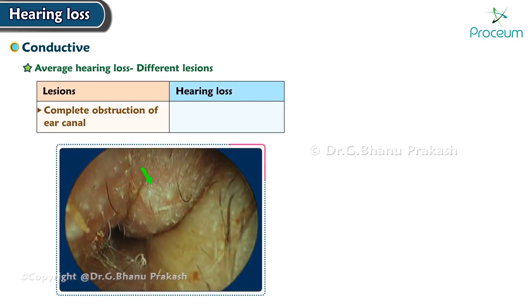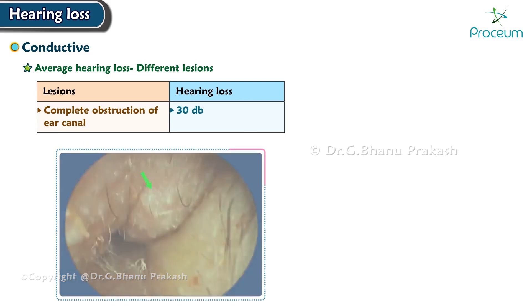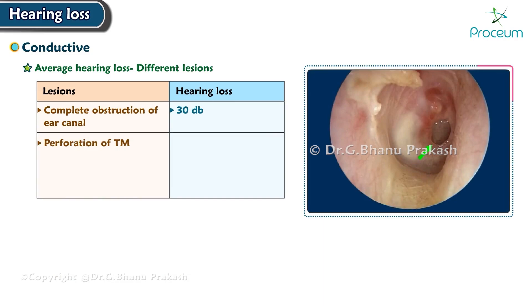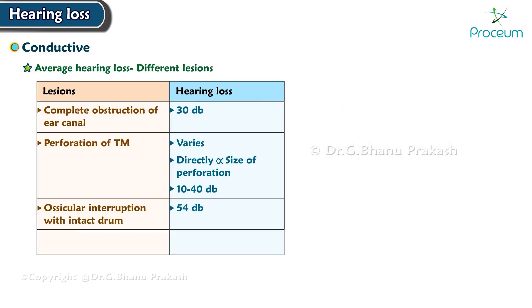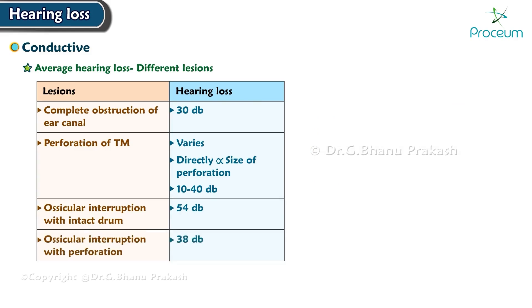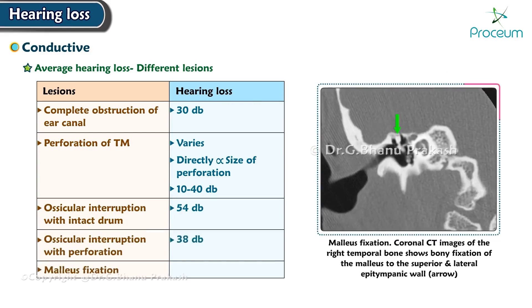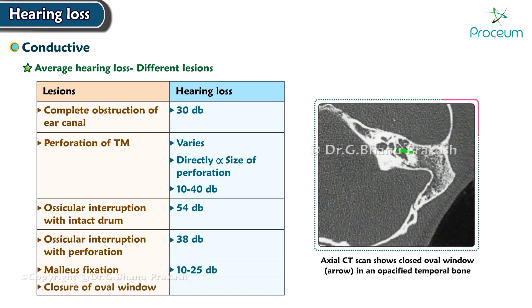Average hearing loss varies by lesion. Complete obstruction of the ear canal leads to 30 dB of hearing loss. Perforation of the tympanic membrane ranges from 10 to 40 dB, proportional to the size of perforation. Ossicular interruption with an intact drum causes 54 dB loss, while ossicular interruption with perforation causes 38 dB. Malleus fixation ranges from 10 to 25 dB. Closure of the oval window leads to 60 dB loss. Notably, ossicular interruption with an intact drum causes more loss than with a perforated drum.